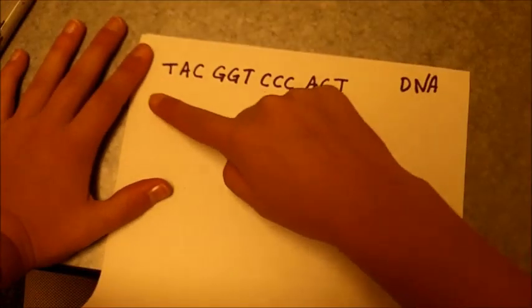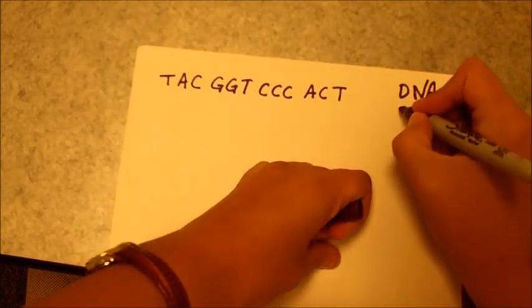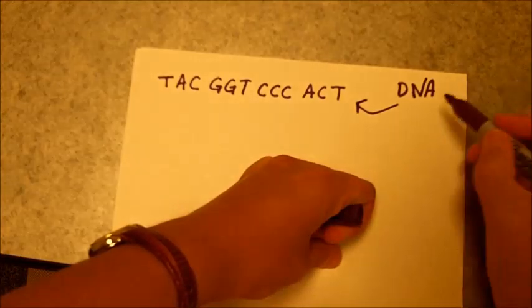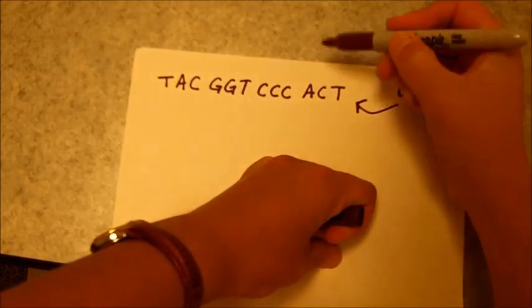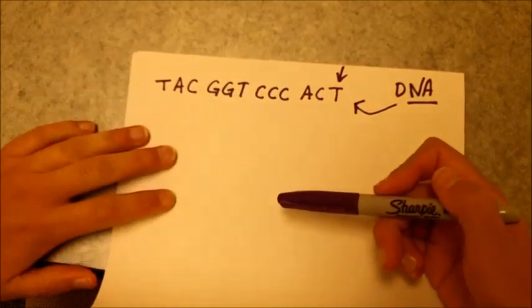So if we start with our DNA strand, which we have right here, more often than not we will be told that it is DNA, but you can also tell it's DNA by the fact that it has T's in it and not U's, because remember only RNA has U's.